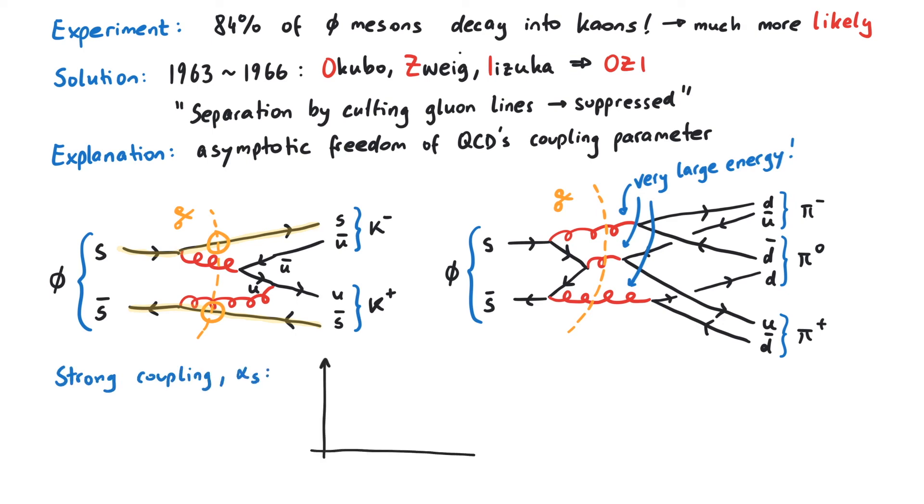Now, asymptotic freedom states that the higher the energy, the weaker the coupling between quarks and gluons. This means that in the right diagram, where the gluons have a really high energy, their coupling strength to the quarks is really small. Therefore, this diagram does not contribute as much as the left one does, and therefore, the left process is much more likely to occur.